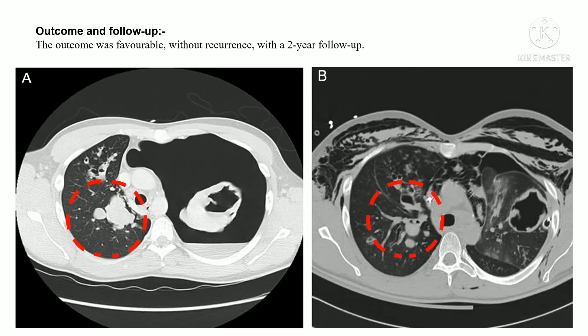The outcome was favorable without recurrence at a two-year follow-up. Two CT scans are shown — CT scan A and CT scan B. CT scan A demonstrates a complete left tension pneumothorax with mediastinal shift, voluminous cavitations in the left lung, and parenchymal infiltrations in the right lung. CT scan B, taken after day seven, shows bilateral cystic bronchiectasis with mucoid impactions, multiple bilateral nodular opacities, and persistent voluminous cavitations in the left lung.